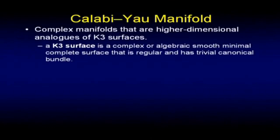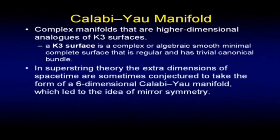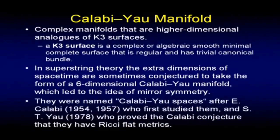What is a Calabi-Yau manifold? It's a complex manifold — higher-dimension analogies of K3 surfaces, which are complex, algebraic, smooth, minimal, complete surfaces that are regular and have trivial canonical bundles. In superstring theory, the extra dimensions of space-time are sometimes conjectured to take the form of a six-dimensional Calabi-Yau manifold, which led to the idea of mirror symmetry. They were named after E. Calabi, who first studied them, and S.T. Yau, who proved the Calabi conjecture that they have Ricci-flat metrics.